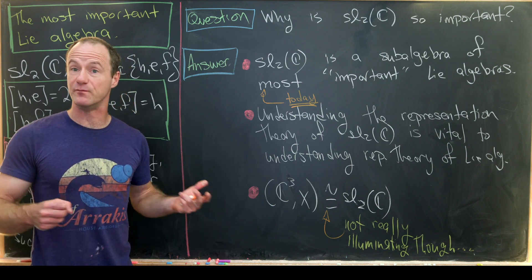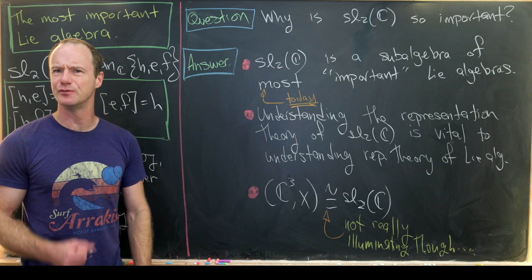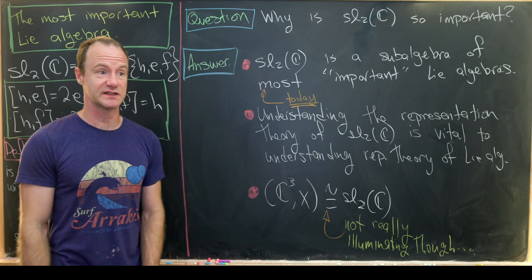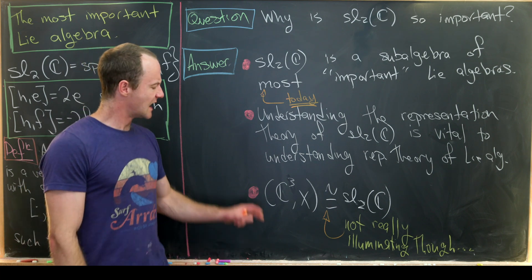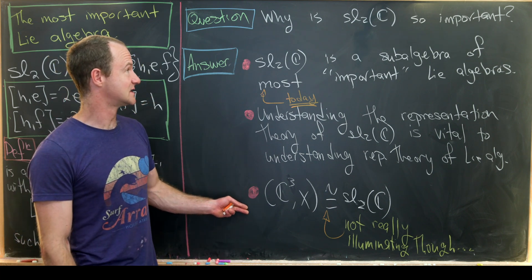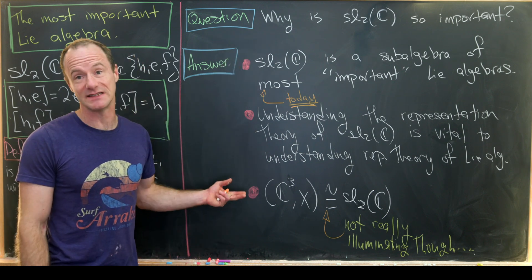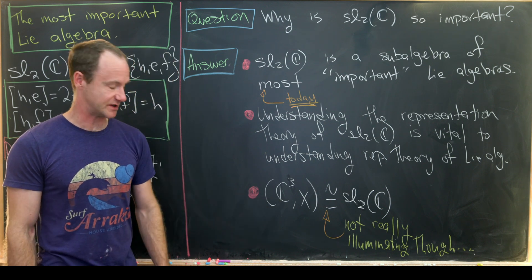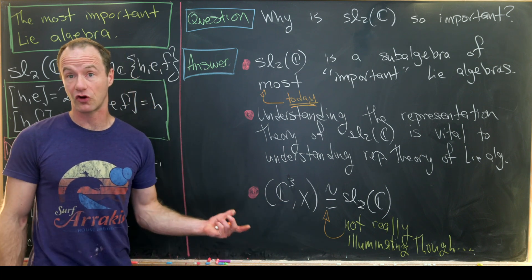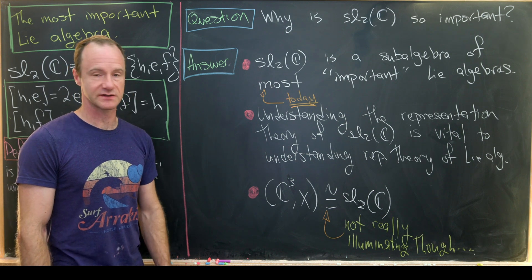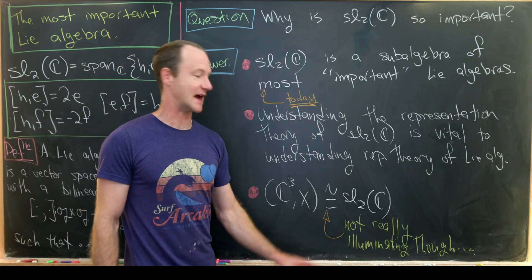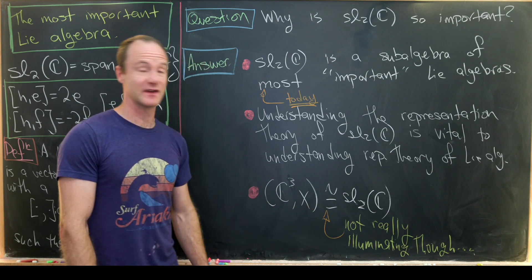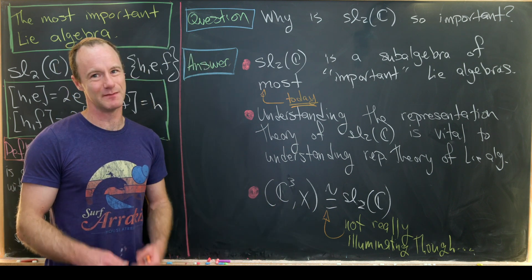What's really important is that this leads to the second point: understanding the representation theory of SL2 is vital to understanding the representation theory of all Lie algebras. I'm thinking about doing a bigger video on the representation theory of SL2 — it's really beautiful — probably on the second channel, Math Major. As a bonus fact: if you take all three-vectors with complex entries and the cross product as you'd learn in multivariable calculus, that's in fact isomorphic as a Lie algebra to SL2(C). We won't go over that here though, as the isomorphism is a bit messy.